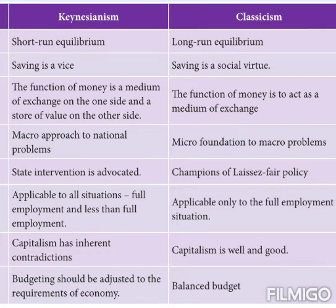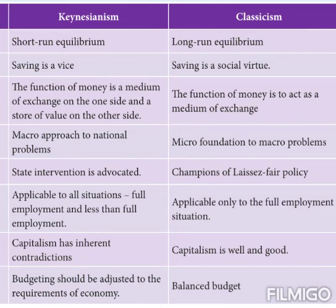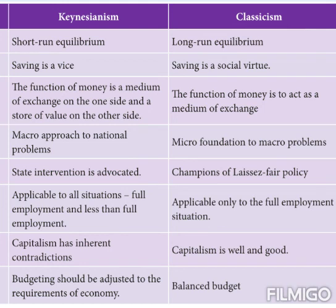Looking at the budget, Keynesians argue that the government budget should be adjusted to meet economic requirements. If you look at the income and expenditure of the government, the budget should be balanced and adjusted to the economic budget conditions accordingly.